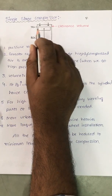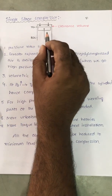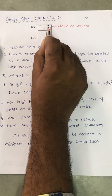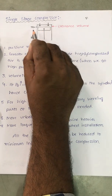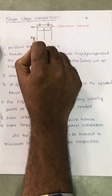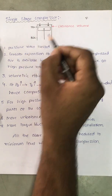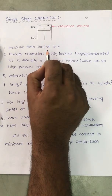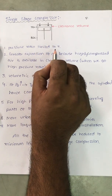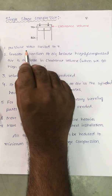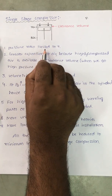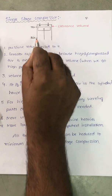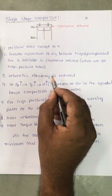A single stage compressor means there is only one cylinder and one piston, with a clearance volume, top dead center, and bottom dead center. The pressure ratio achievable with a single stage compressor is limited to 7 bar.